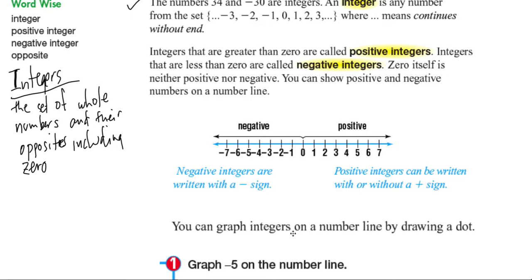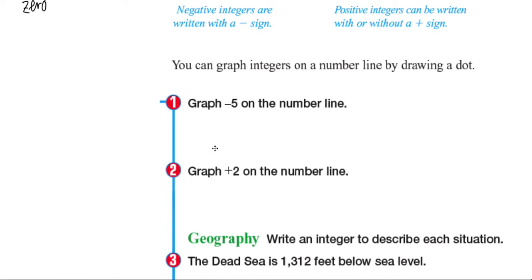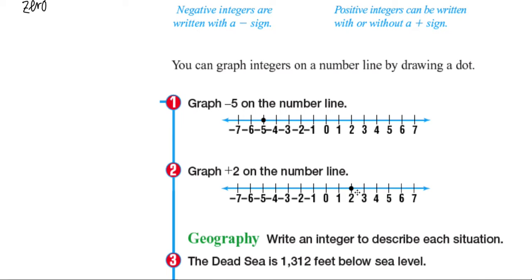You can graph integers on a number line by drawing a dot. So negative 5 graphed on a number line is simply, you have the number line and dot on top of negative 5. Remember, it's not over the number line or under the number line. It's supposed to be on the number line. So we want to graph positive 2 on the number line. Again, we have the number line, simply put a dot over positive 2.